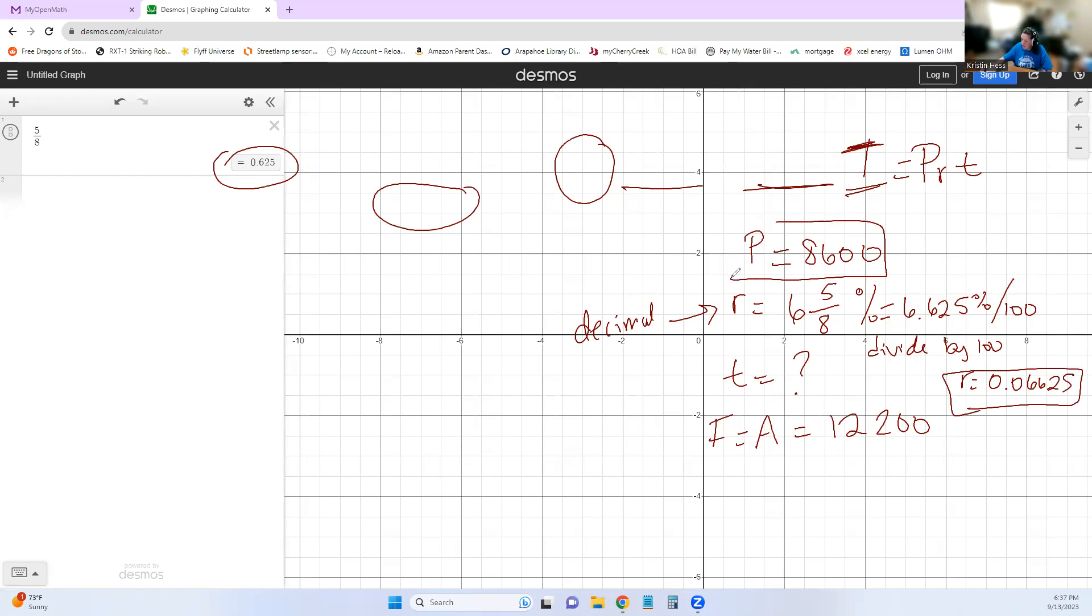We know our present value. So we've got the present value. We've got our rate. Time is what we're looking for. I is the total interest earned. So to find I, we're going to compare the amount we started with and the amount we ended with. So this is our start. You put that much money in the bank. This is the end. This is how much you withdrew at the end, and everything else is interest. So I'm going to take 12,200 and subtract 8,600. So that means that we earned $3,600 in interest by just sticking it in the bank for a certain amount of time.